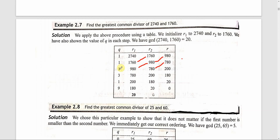Again, find the quotient. 980 divided by 780 is 1. The remainder is 200. That is, 980 minus 780 gives remainder 200. The next step is to exchange the values, giving R1 = 780 and R2 = 200.